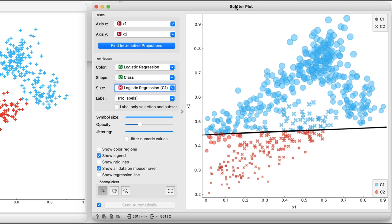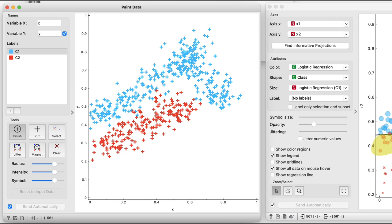Here logistic regression fails miserably. This is the decision boundary. You can see many of the points are misclassified. So returning to our painted data, we need a more complex decision boundary.